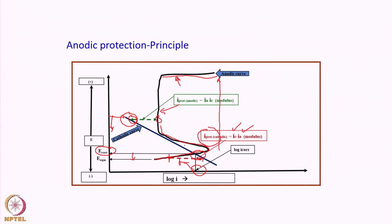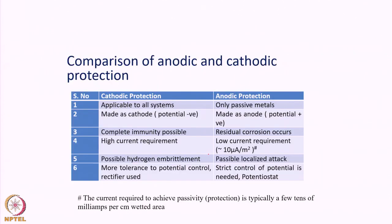Even though the current required to anodically protect a structure is small, the system must be able to provide enough current to overcome the critical current density. It is necessary to understand how anodic and cathodic protection differ in practice.